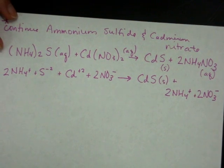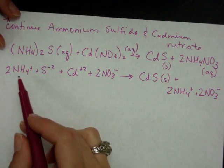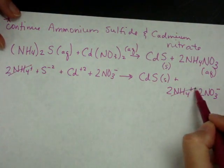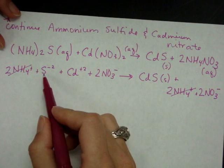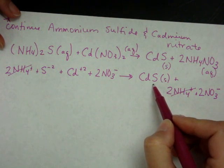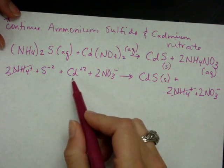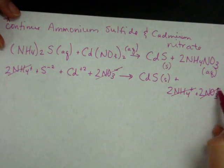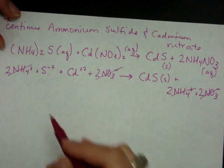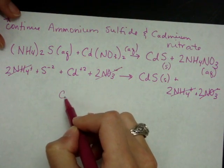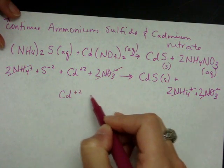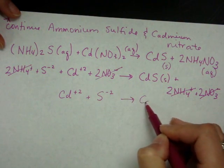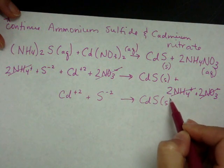Now we have to look for our spectator ions. If we start from the left, we have NH4 on the left and NH4 on the right in the same form. So that's a spectator. Sulfide on the left, but part of the compound on the right, so it stays. Cadmium, the same thing. Then lastly, two nitrates on the left and two nitrates on the right, so that cancels. And that leaves us with a net ionic equation of cadmium plus two plus sulfide ion yields cadmium sulfide solid.